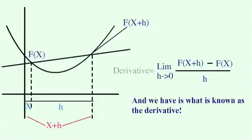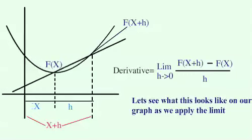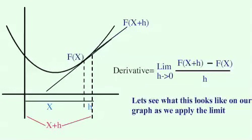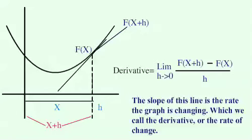What we have is what is known as the derivative. Let's see what this looks like on our graph as we apply the limit. As you can see, the line touches our graph at only one point. The slope of this line is the rate at which the graph is changing at this point, which we call the derivative.